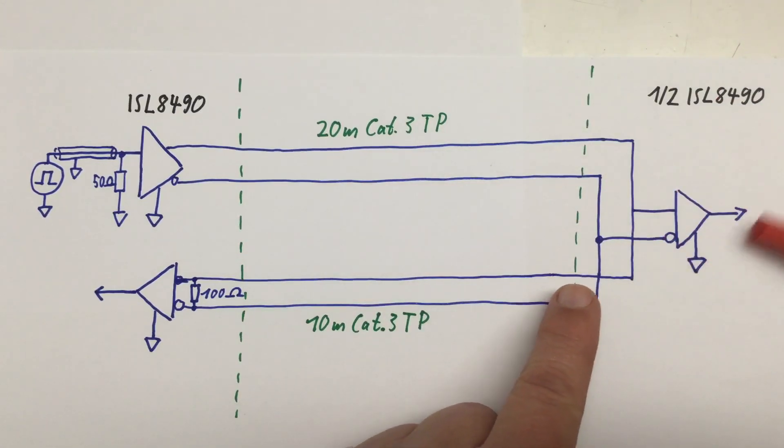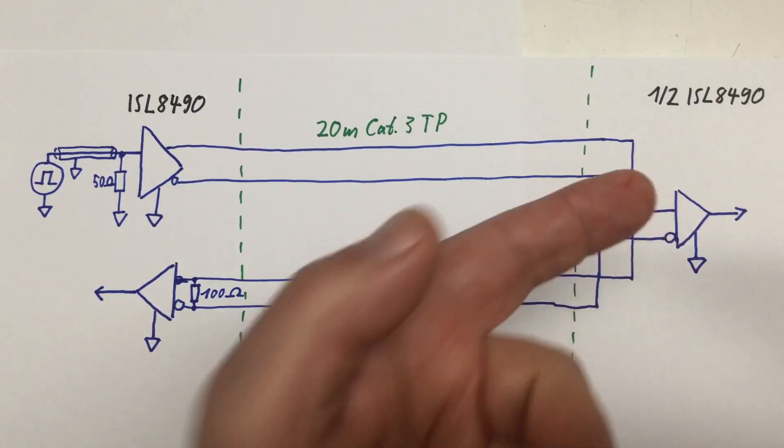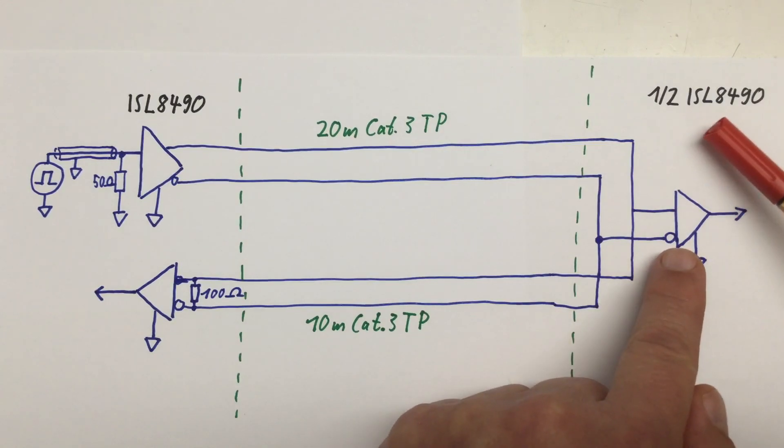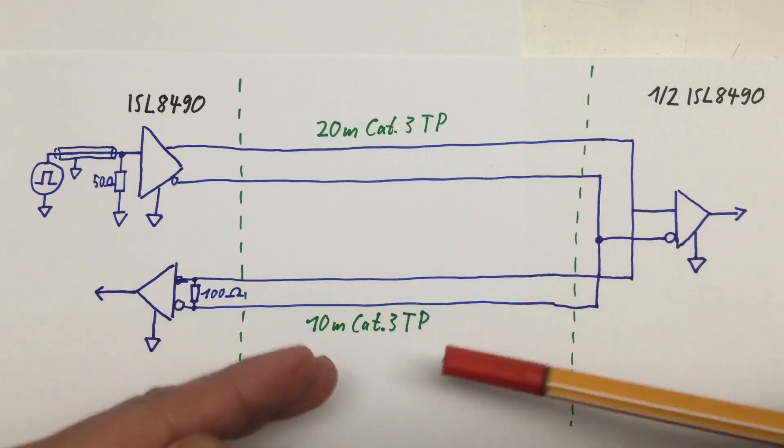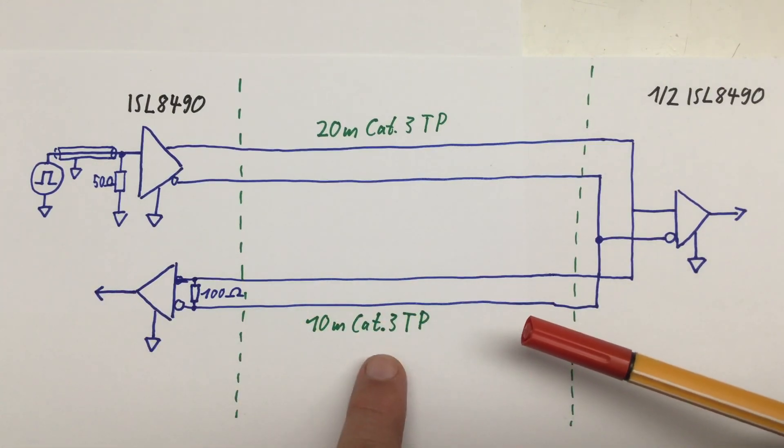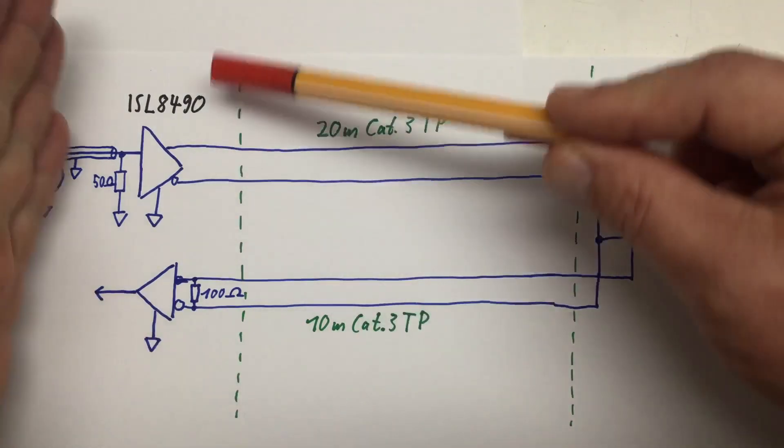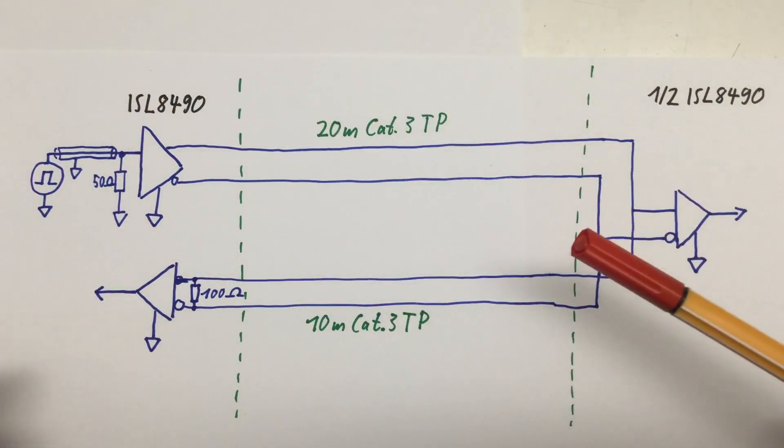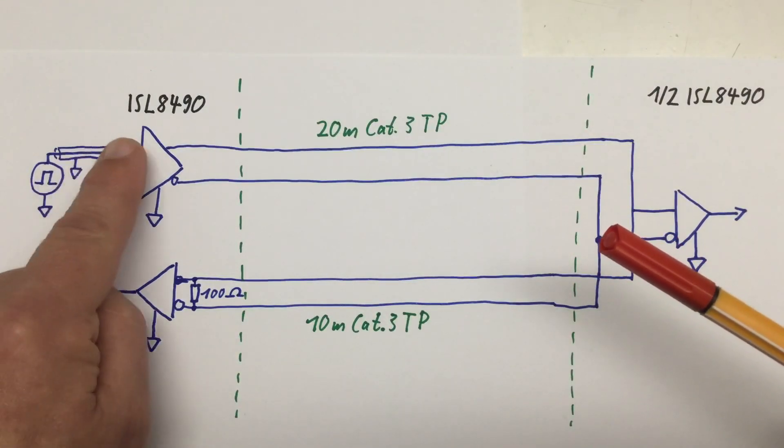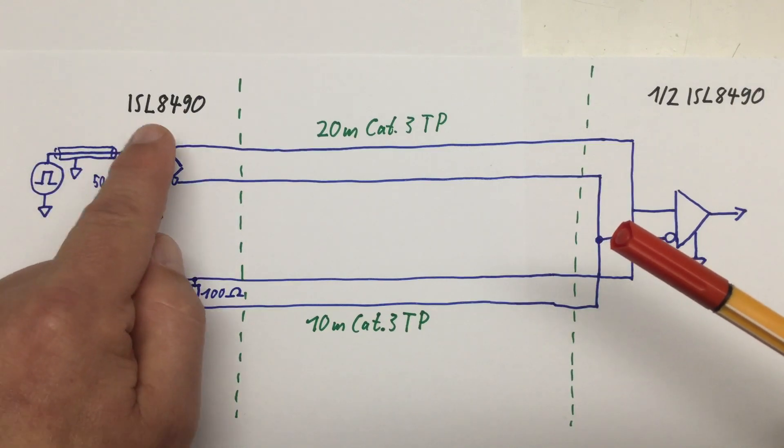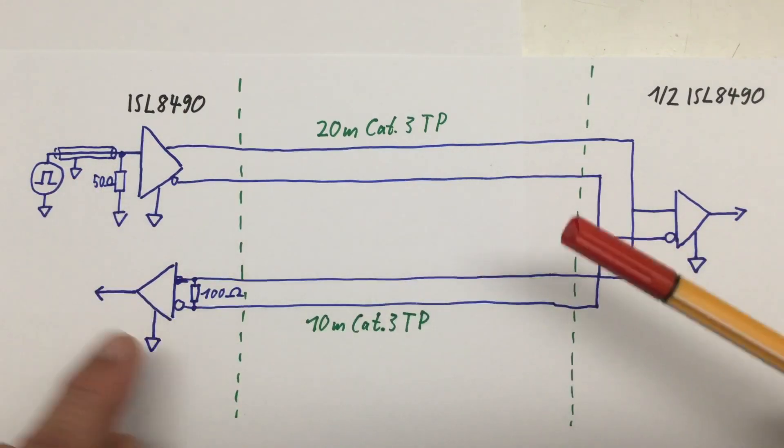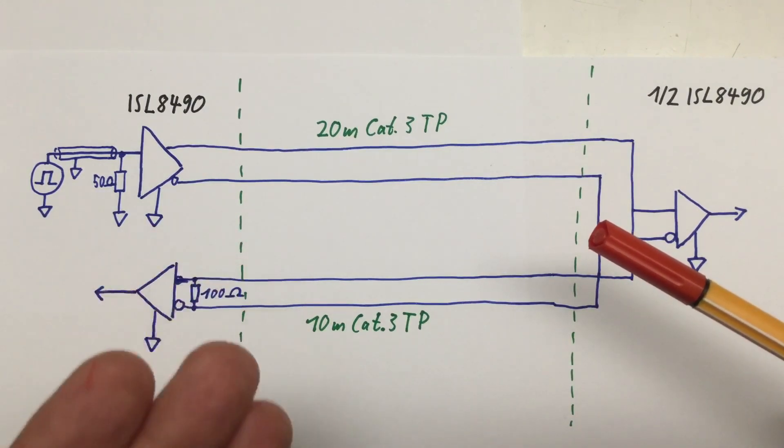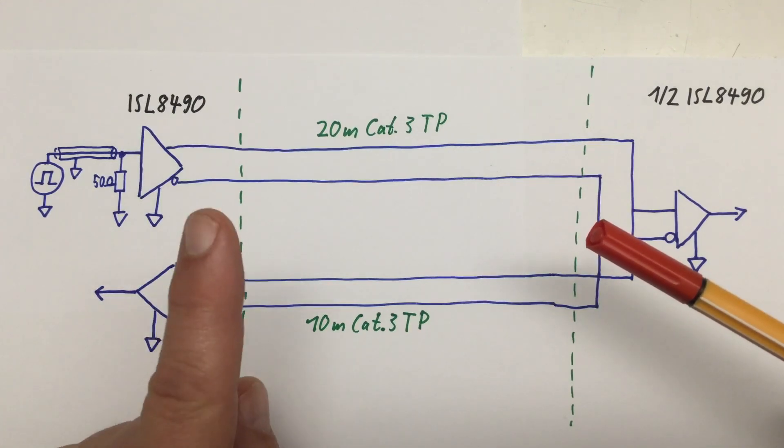where it is received by the receiver half of another ISL8490, and then loops back via the additional 10 meters of CAT3 twisted pair cable to the left breadboard, where it is received by the receiver half of my first ISL8490. And at the end of the transmission line, I have a 100 ohm termination. I talked about that in depth in part one of the details.